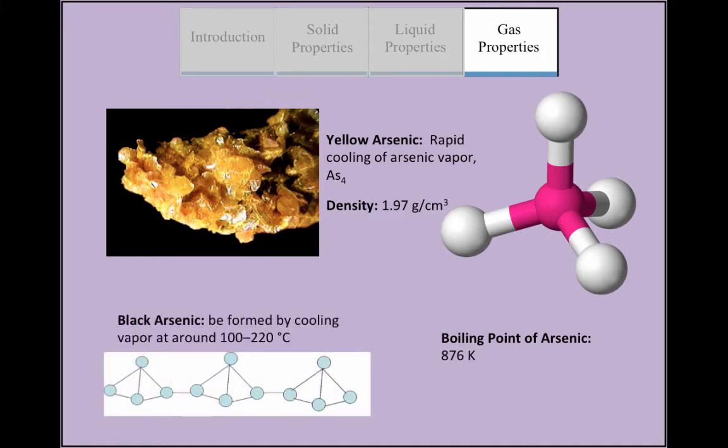Black arsenic can also be formed by cooling vapor at around 100 to 220 degrees Celsius. It is similar in structure to red phosphorus and is glassy, brittle, and a poor electrical conductor.